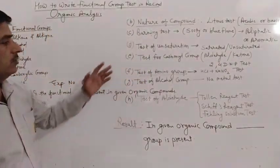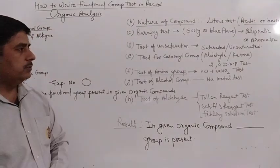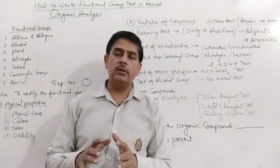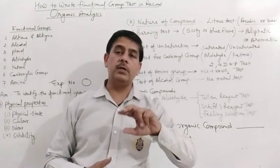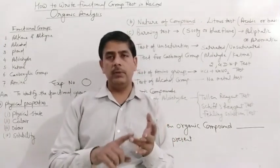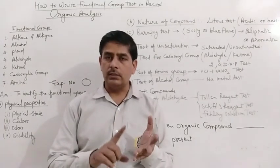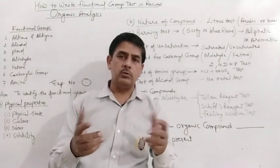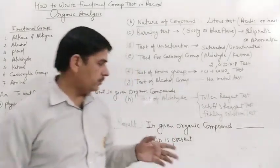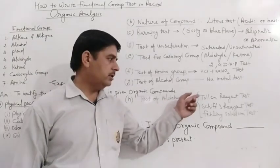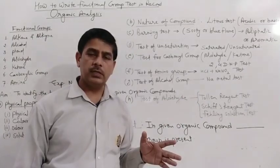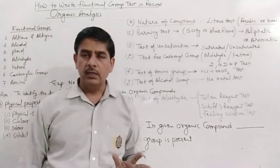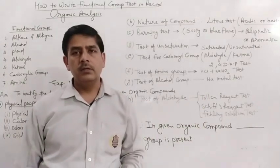Then the test of carbonyl group — this can be identified by the 2,4-DNP test. If the compound gives a positive 2,4-DNP test, that means it may be any carbonyl compound — it may be aldehyde or it may be ketone, because both show the 2,4-DNP test. But the confusion is whether it is aldehyde or ketone. You can perform some other tests for aldehyde such as Tollens' reagent test, Schiff's reagent test, and Fehling's solution test. If it gives positive results in these tests then it is surely aldehyde. If it gives negative results, it may be ketone.